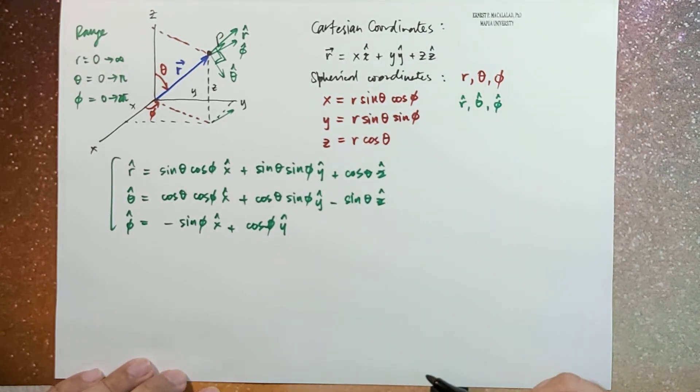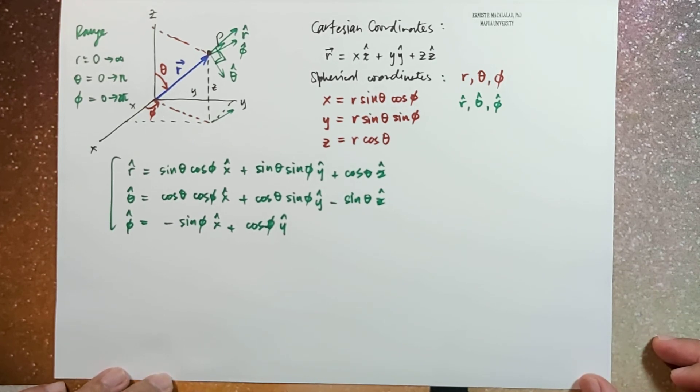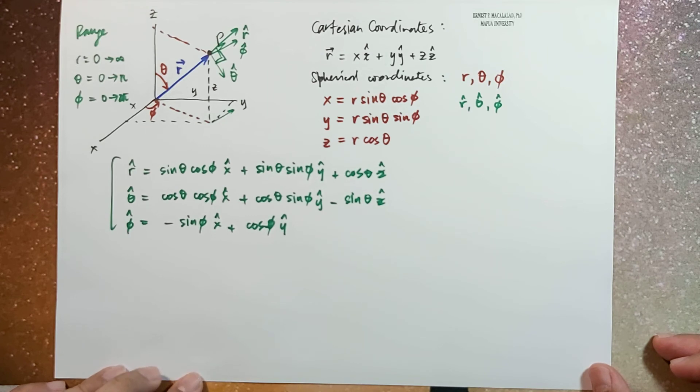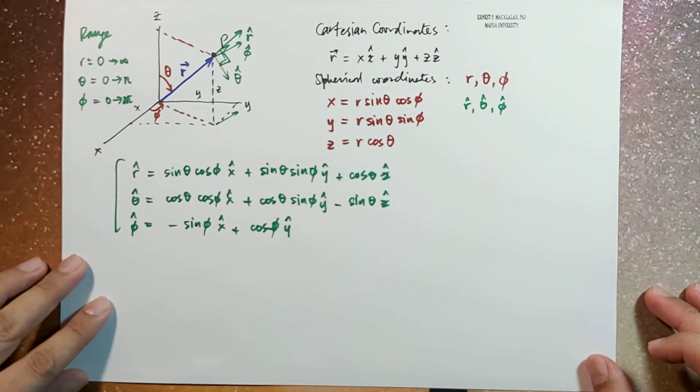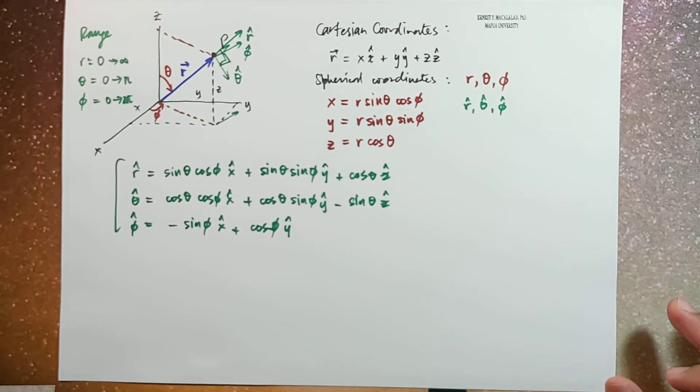Now in the next video, we're going to talk about how we express infinitesimal length DL, volume element D tau, and area element DA in spherical coordinate system. But for now, thank you for watching, and I'll see you guys in the next video. Bye-bye!